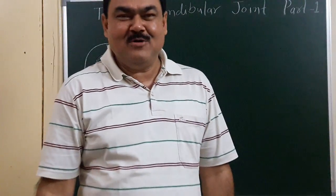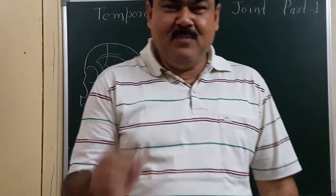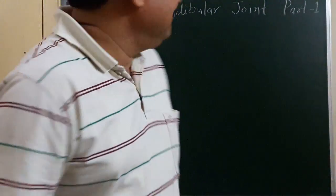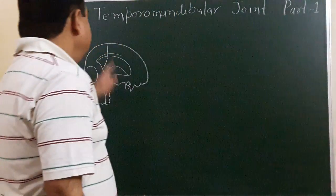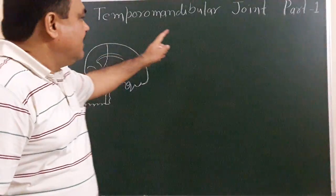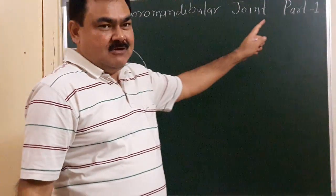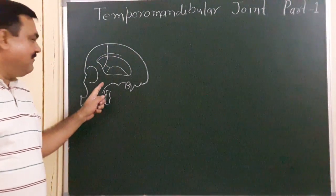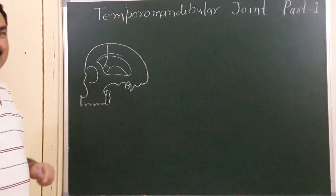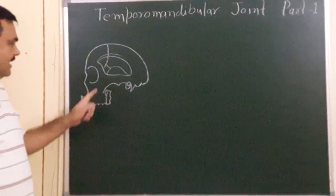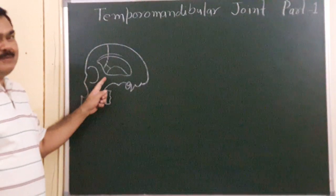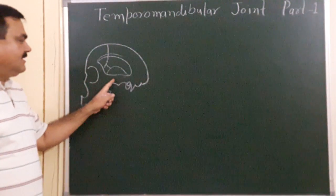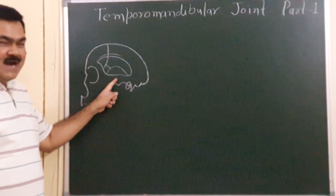Now we will discuss the temporomandibular joint. This is temporomandibular joint, part one. Here in this diagram you can see the lateral view of the skull. Here this is the zygomatic arch.